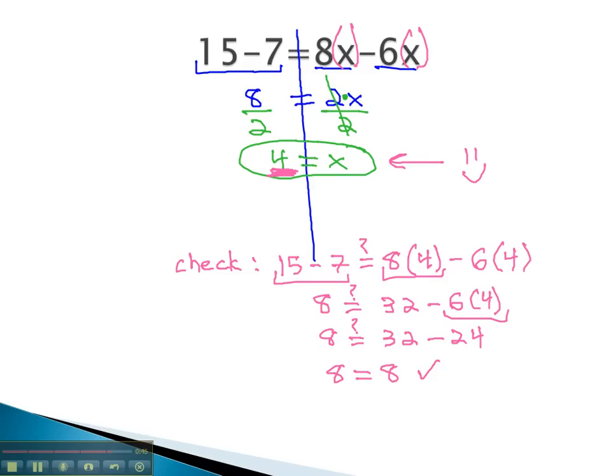It is the value for x that we can plug in to the original equation that will make it a true equation. And that's what we're looking for. What makes these true equations? What is the one value for x we can use to make it true? To solve, we will simplify first, and then we will use either the addition, subtraction, or division principles.